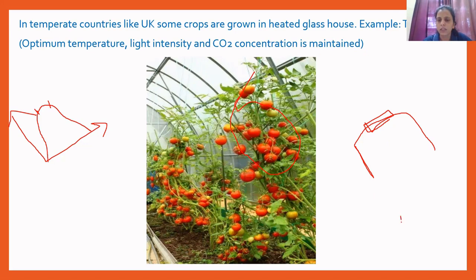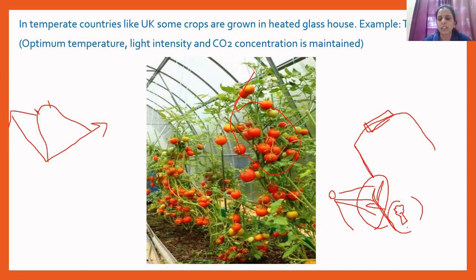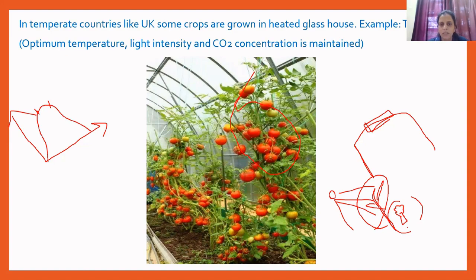Apart from this, short plants or short crops grown in the glass house are grown next to tall plants. Maximum light and heat from sunlight is absorbed by the tall plants, and only a partial amount of heat and light reaches the shorter plants. This is how shorter plants are protected from bright sunlight and high temperature. I hope this topic is clear. In the next video, we will understand the effect of light on gas exchange in plants. Take care, bye-bye.